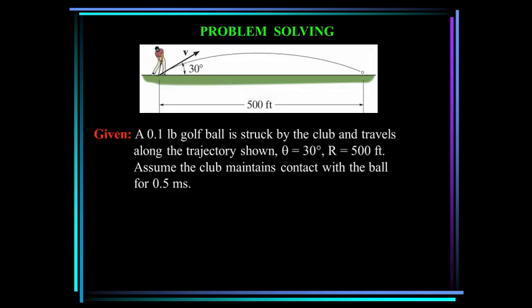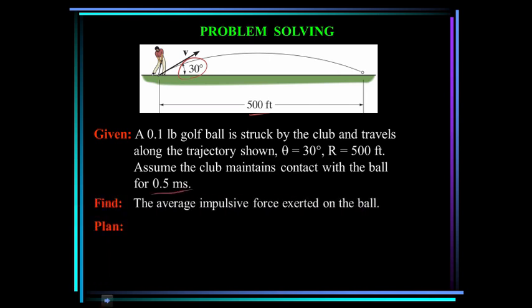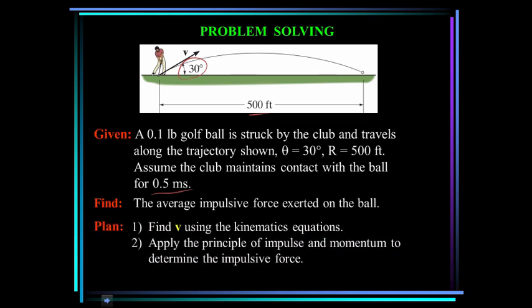Let's do a problem. Here we have a 0.1 pound golf ball struck by a club and it travels 500 feet. We know that the angle that it left the ground was 30 degrees. Assume the club maintains contact with the ball for half a millisecond. Find the average impulsive force exerted on the ball. Our plan is to find v, the velocity, using the kinematics equations from chapter 12, and then apply the principle of impulse and momentum to determine the impulsive force.